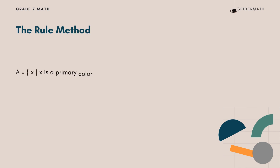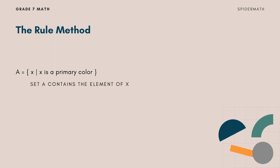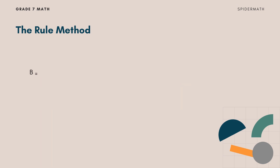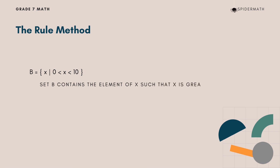Another way of writing a set is called the rule method. We read this as: set A contains the element x such that x is a primary color. Set B contains the element x such that x is greater than 0 but less than 10.